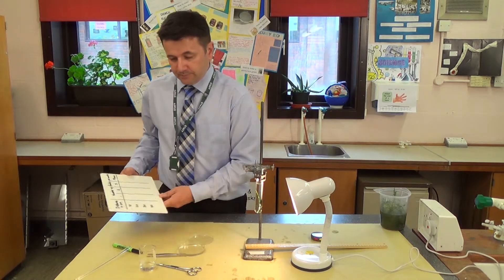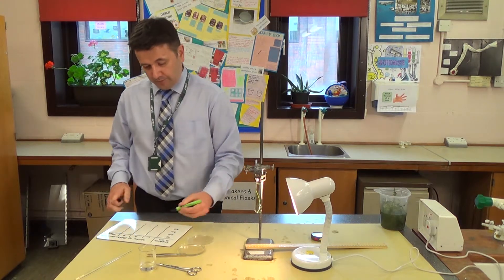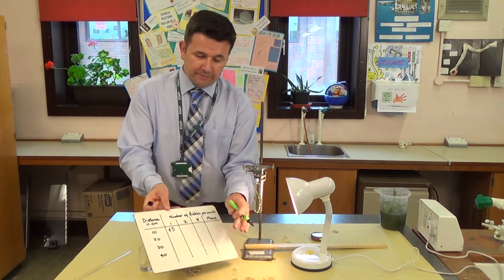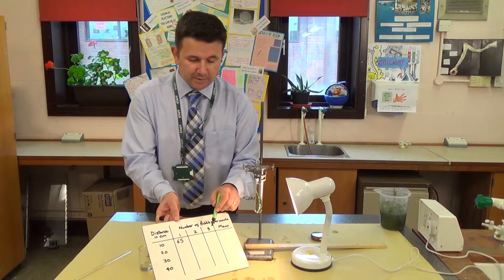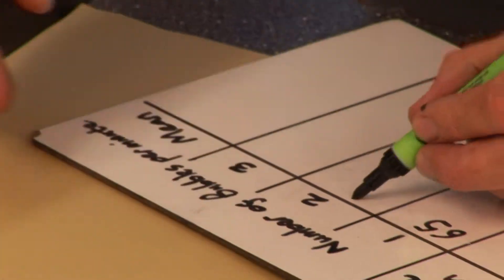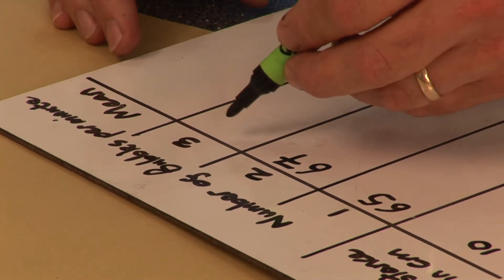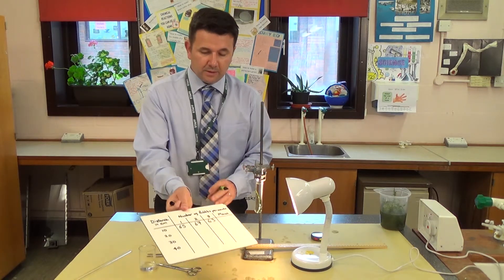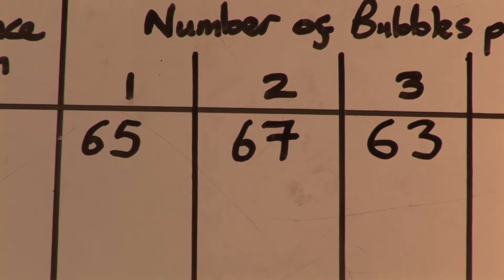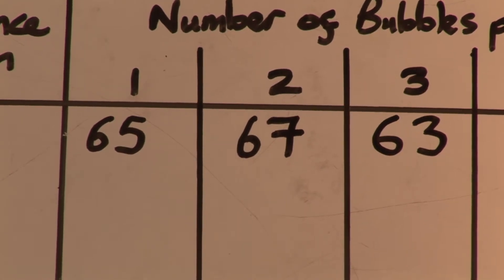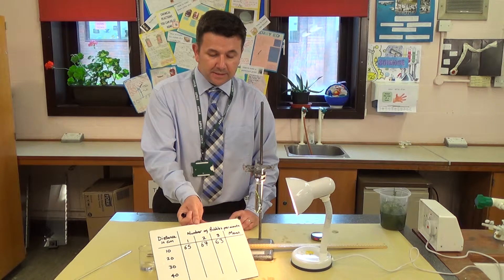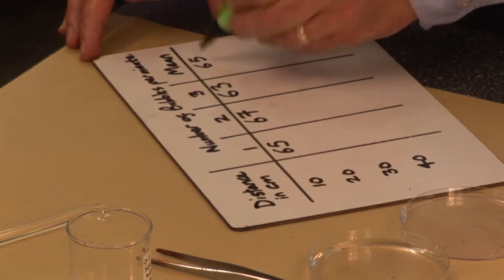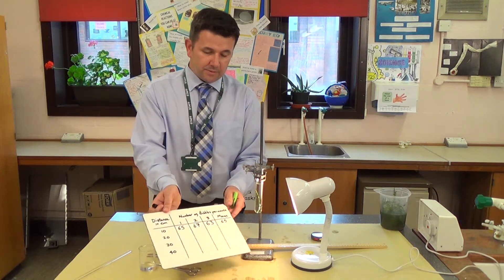For example, at 10 centimetres I found 65 bubbles. Repeating it twice more I got 67 and 63. I can then work out the mean value by adding them together and dividing by three. The average in this case is 65 bubbles per minute.